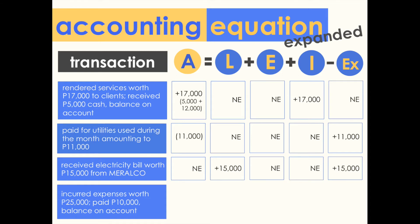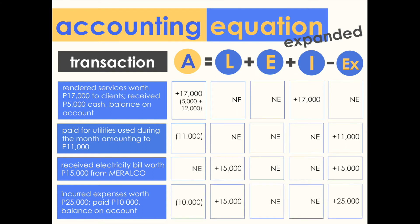Transaction four: incurred expenses worth 25,000 pesos — paid 10,000 pesos, balance on account. The clearest thing here is that there is an increase of 25,000 pesos in expense. There is a payment of 10,000 pesos — a decrease of 10,000 in assets. The unpaid balance of 15,000 pesos will be recorded as a payable, increasing liabilities. The net effect on the left side is a decrease of 10,000 pesos, and on the right side: plus 15,000 minus 25,000, which also gives a net decrease of 10,000 pesos.